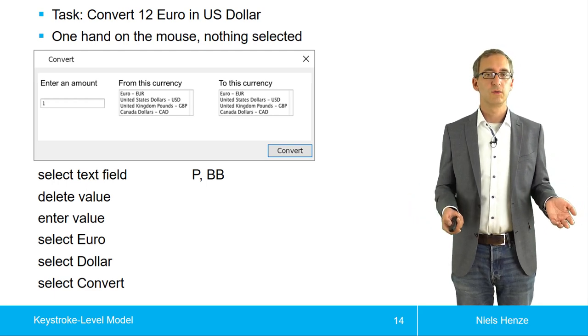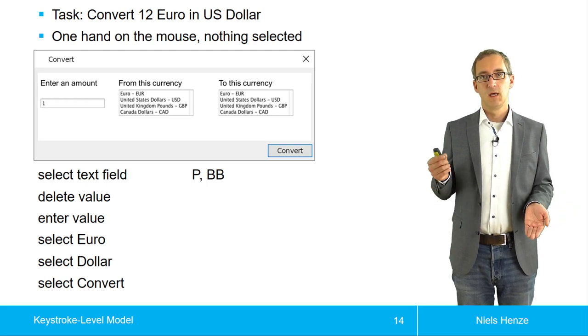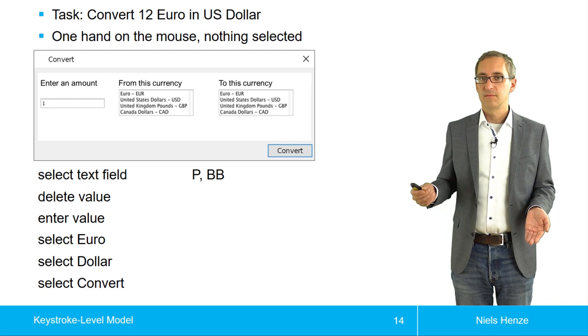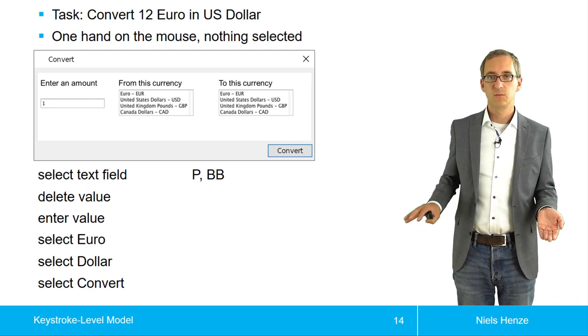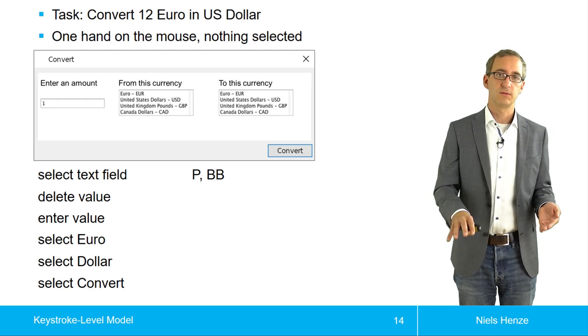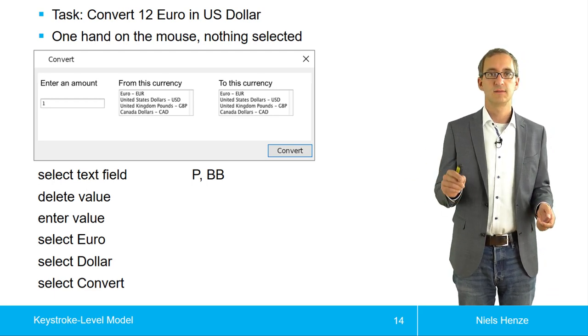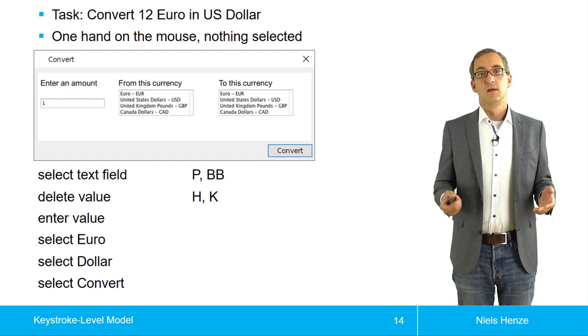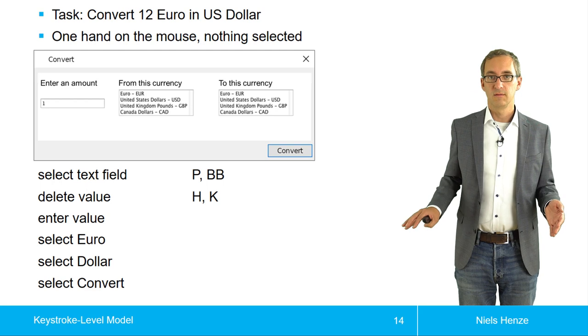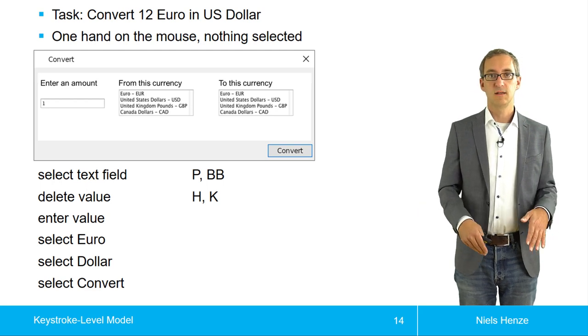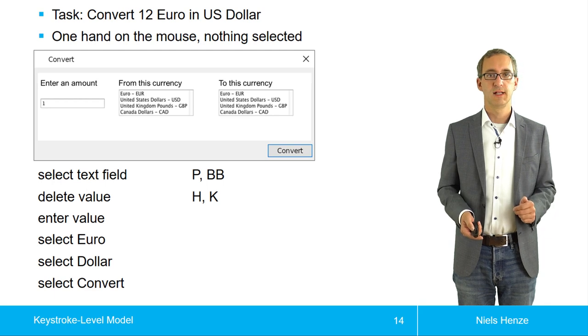What did we do next? We deleted the value that was already there. It doesn't require the mouse anymore, but now suddenly it requires the keyboard. So I have to move my hand from the mouse to the keyboard. Then I have to delete the value. What does it mean? I just press the delete button. As a result, I have the homing operator going from one device to the other, and then I press one key.